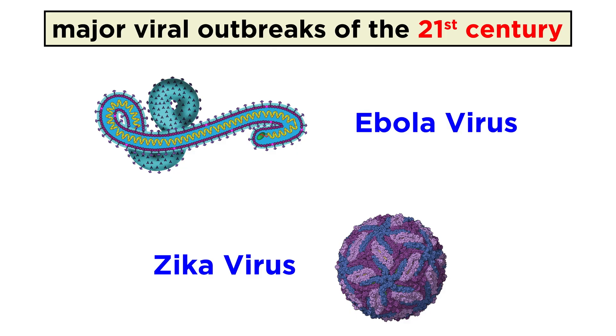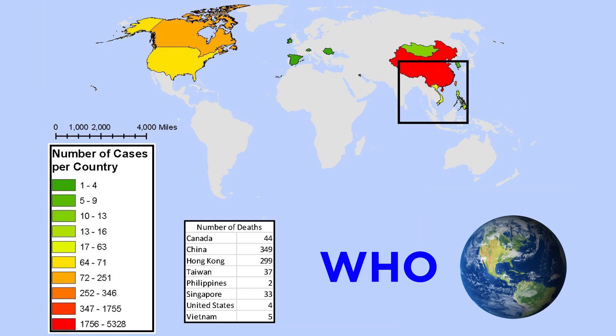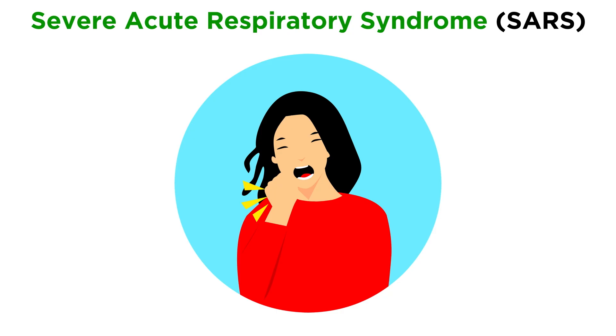Over the past few tutorials, we've been covering several viruses that have been responsible for outbreaks in the 21st century, so let's continue with another. In 2003, there was a mysterious respiratory disease spreading rapidly around the world. The World Health Organization issued a global alert for a severe form of pneumonia with unknown origin, after significant outbreaks were reported in China, Vietnam, and Hong Kong. They called the disease Severe Acute Respiratory Syndrome, or SARS.